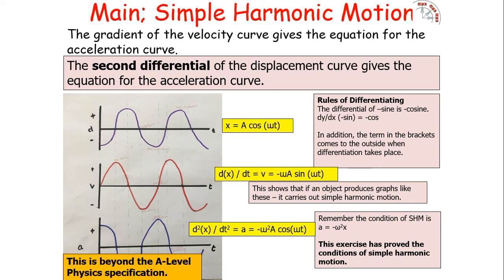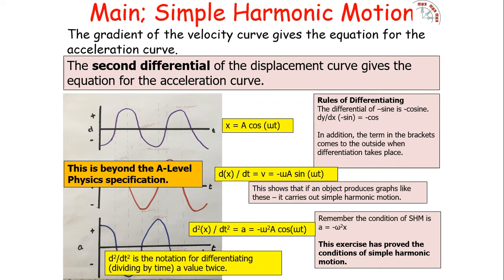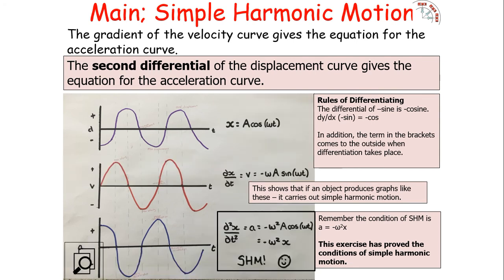This shows how mathematics can prove the physics behind these concepts. Just to note: d²x/dt² is the notation for the second differential, or dividing by time twice. We've therefore mathematically proven the condition for simple harmonic motion, though again this is not required for the A-level physics specification.